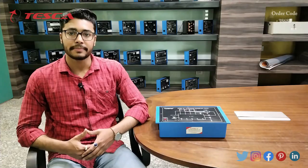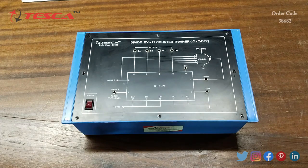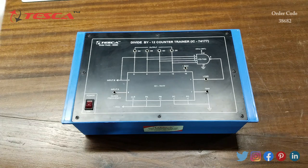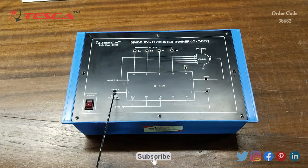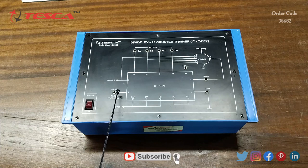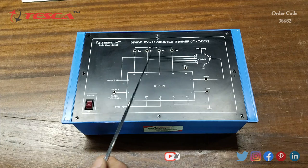This is the divide by 12 counter trainer. It has IC74177, an input port for clock frequency, and output ports QA, QB, QC, QD from where we will observe the output waveforms on DSO.